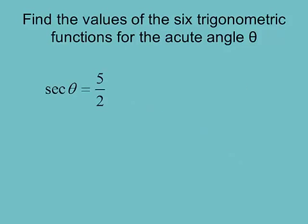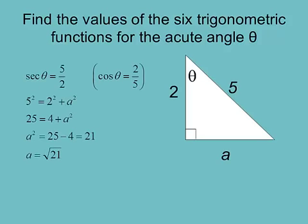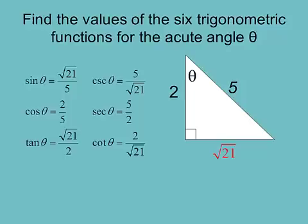Here secant = 5/2. Take the reciprocal to get cosine = 2/5 — adjacent over hypotenuse. Using Pythagorean theorem, the opposite side is √21. So sine = √21/5, cosecant = 5/√21, cosine = 2/5, secant = 5/2, tangent = √21/2, cotangent = 2/√21. It's more of the same.